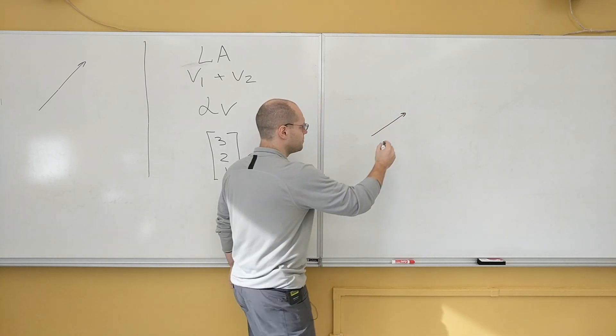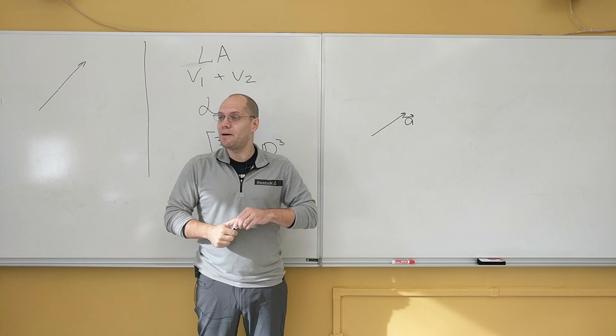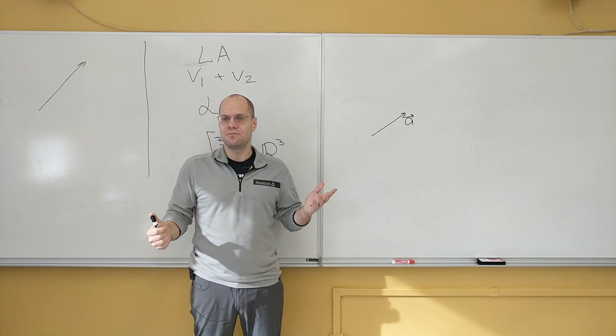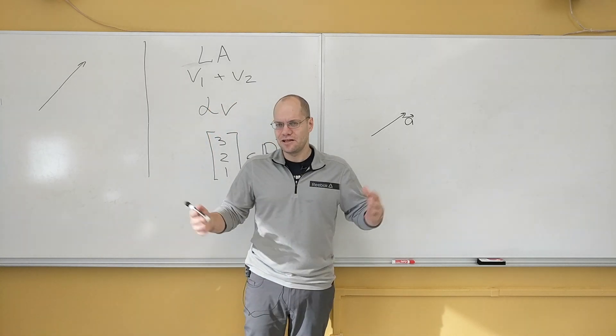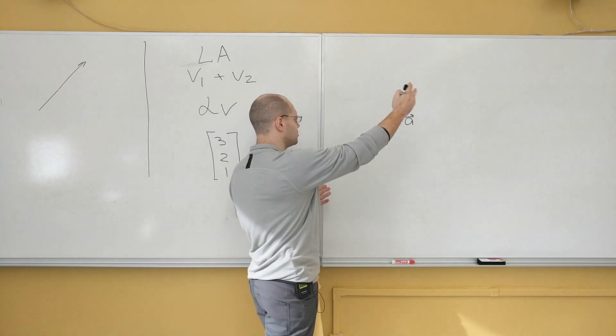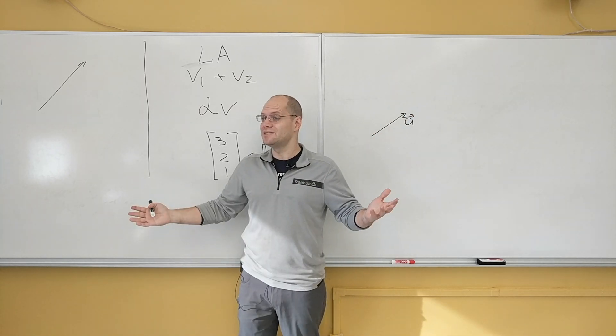Here is the vector a. Let's multiply it by two. What does it mean to multiply it by two? Well, once again, a seemingly arbitrary definition. You keep its direction, you double its length.